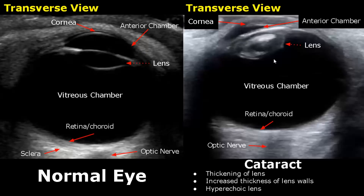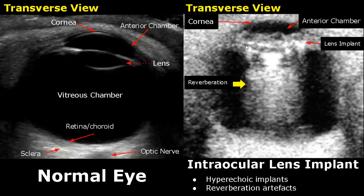This is an image of an intraocular lens implant. It is hyperechoic and will have reverberation artifacts, and it will look like this.